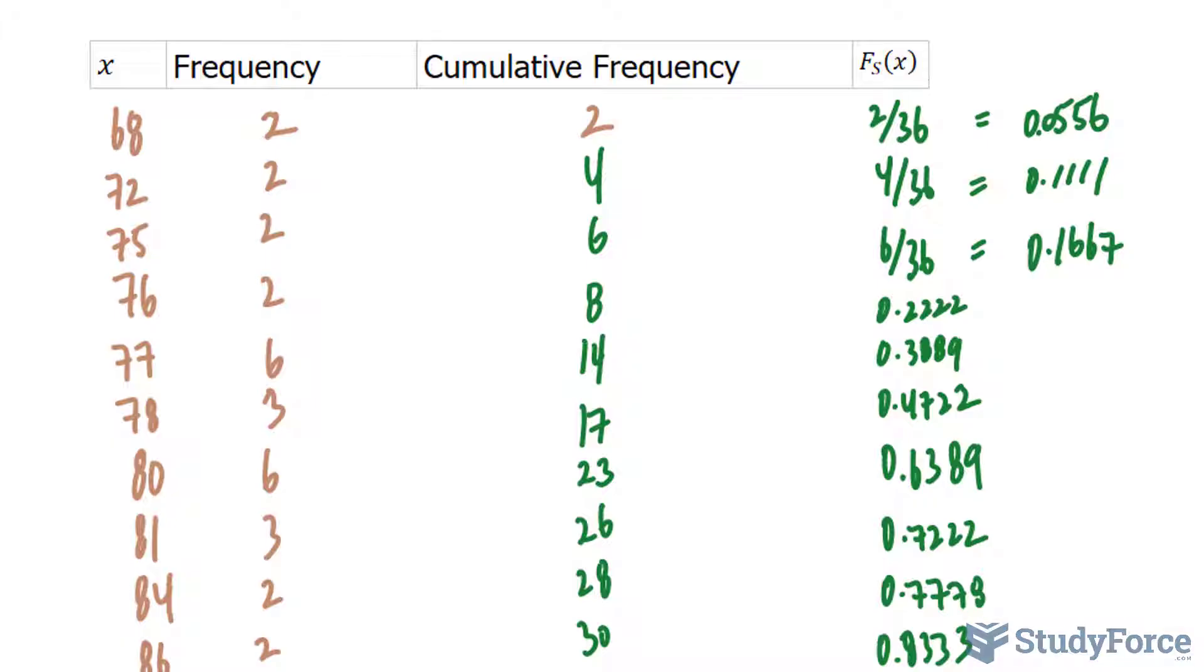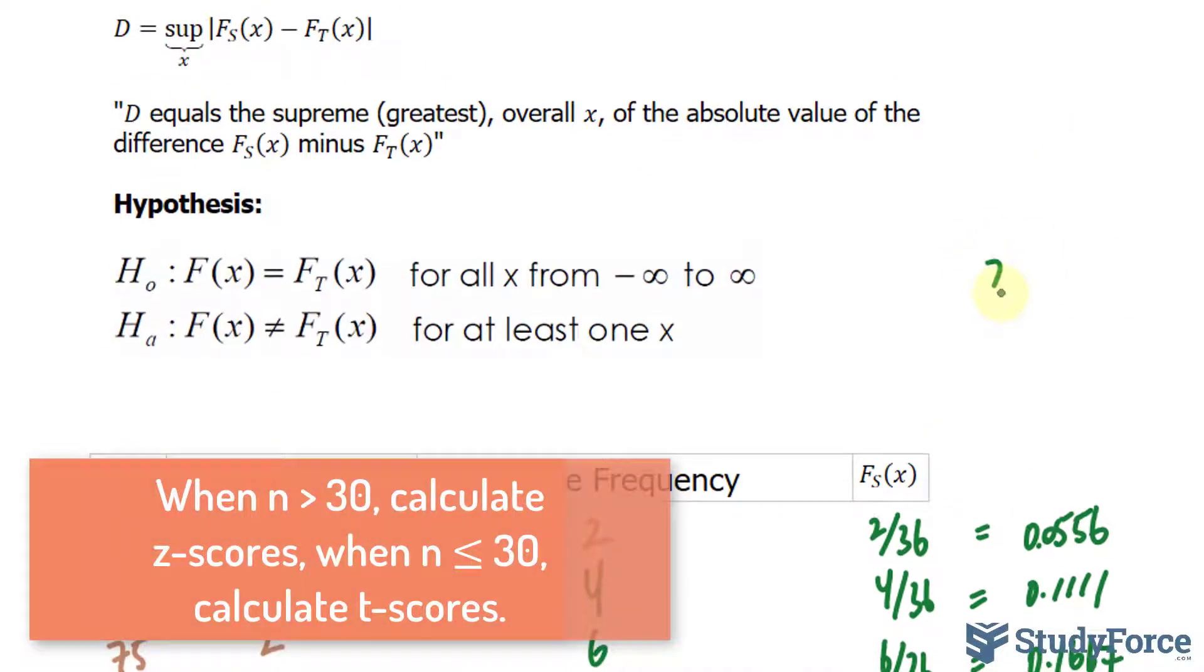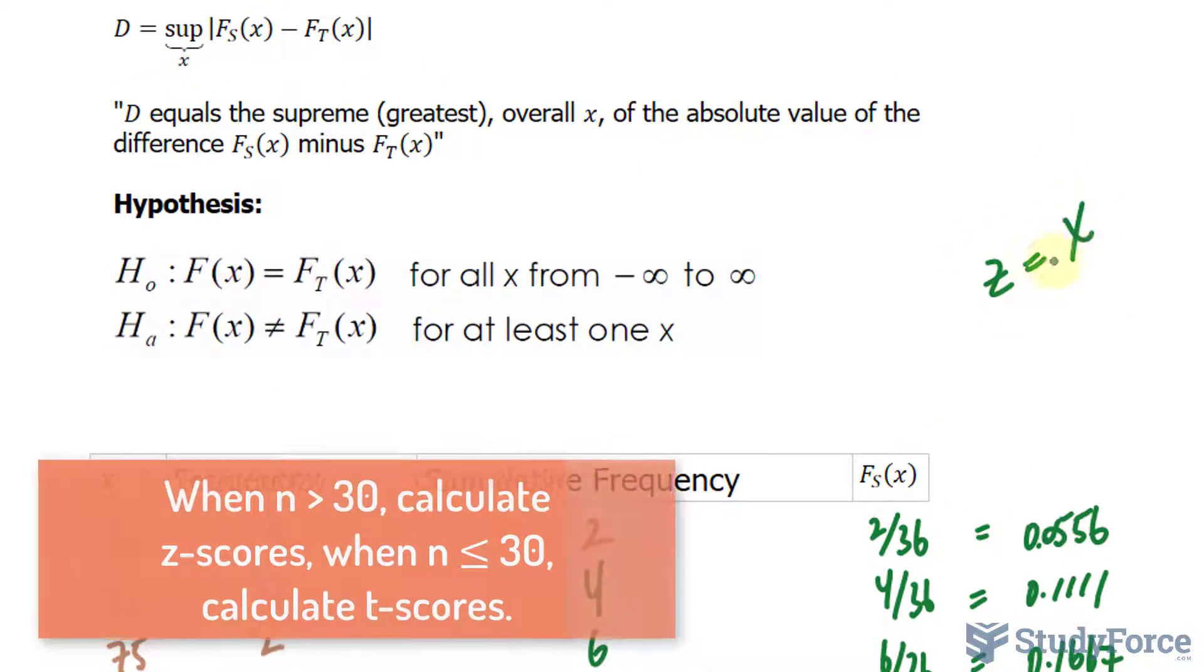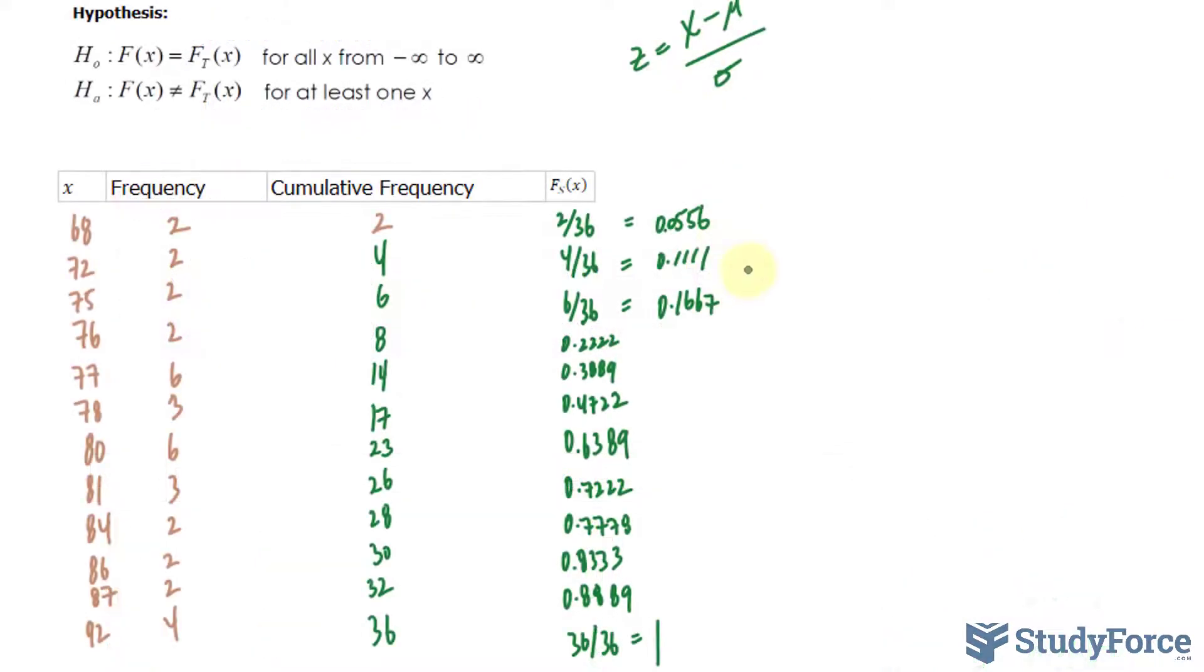Now what we do to find out F_t, the theoretical normal, is we find the z-score for each of these x values. The z-score is calculated by taking the observation minus the mean over the standard deviation. So what I will do is create another column, which I'll call F_t(x), and in this column we'll be writing out the z-scores using the formula that I just showed you.